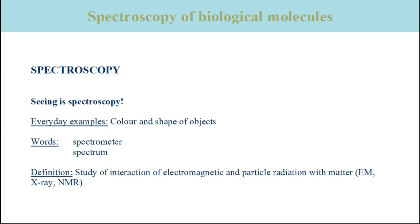The light not absorbed reaches our eyes, where its color is analyzed by three different types of photoreceptors which are sensitive for different colors of the incoming light. Thus, our eyes analyze the color of the incoming light.